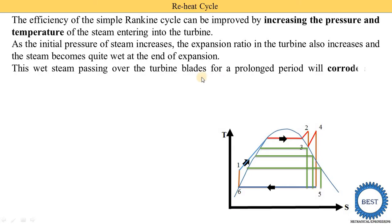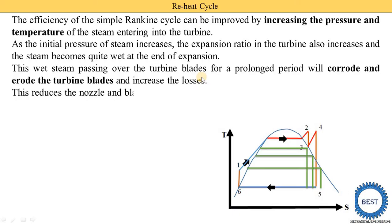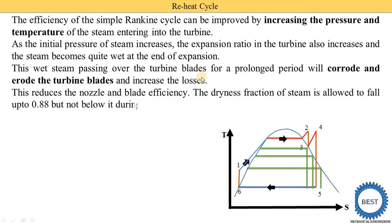Wet steam passing over the turbine blades for prolonged periods causes corrosion and erosion of the turbine blades and increases losses. This reduces nozzle and blade efficiency. The dryness fraction of steam is allowed to fall up to 0.88 but not below it during expansion in the turbine. If the dryness fraction goes below 0.88, the chances of corrosion and erosion increase significantly. We need to maintain a dryness fraction of at least 0.88.